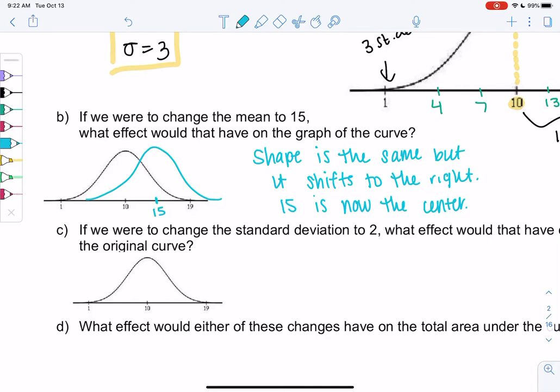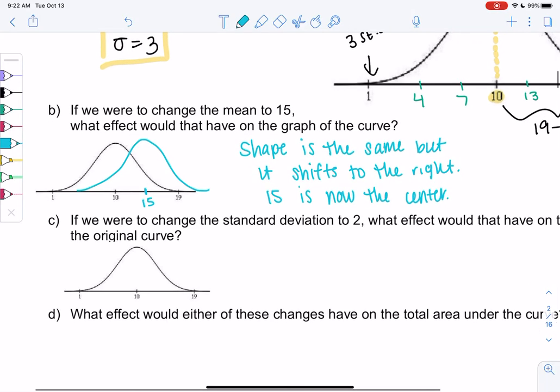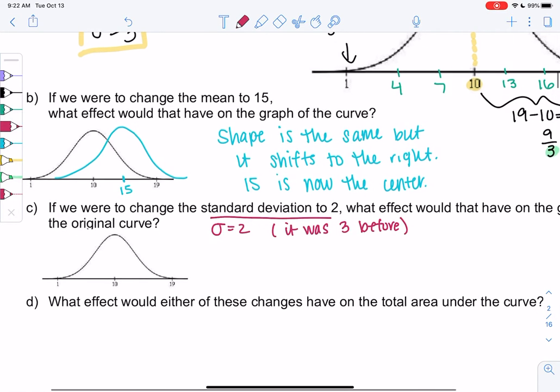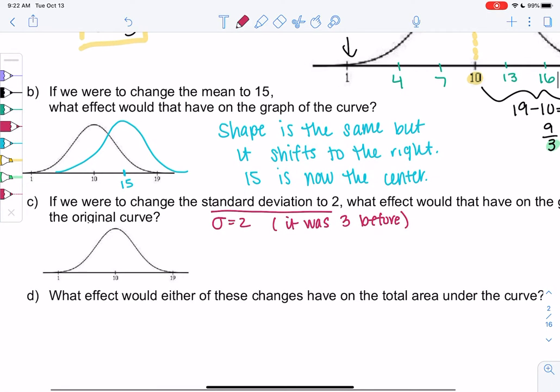What happens when standard deviation changes? So part C. If we were to change the standard deviation to 2, so sigma is 2. I think it was 3 before. What effect would that have on the original curve? So basically it's going to end sooner, if we remember back in Chapter 3. It's going to get flat sooner, which means it's going to get a little bit taller. Less standard deviation was more narrow, so the curve will be more narrow and taller. It has to be taller to make up for the lost area.